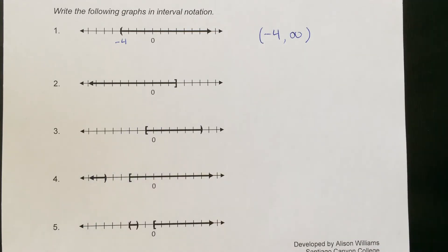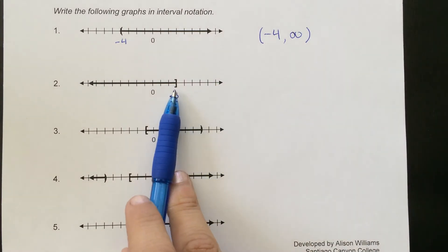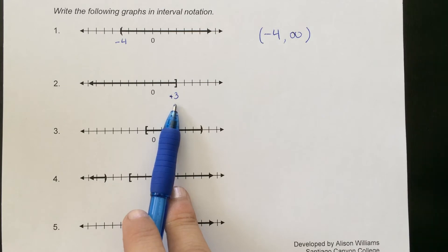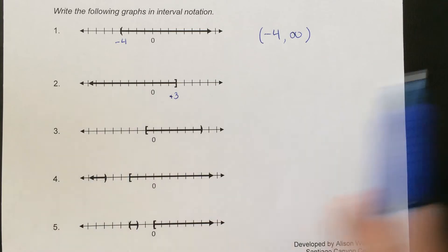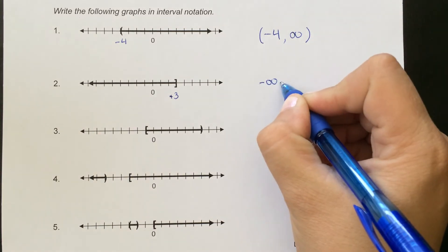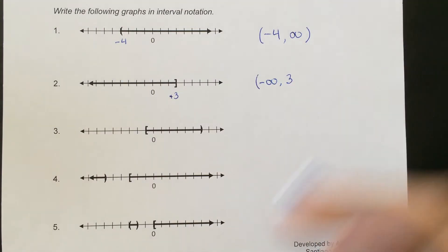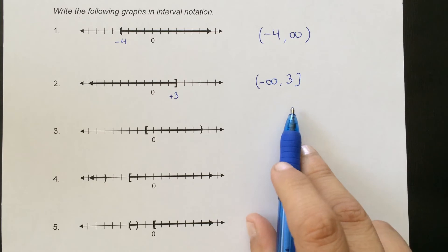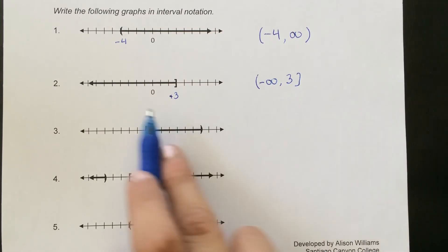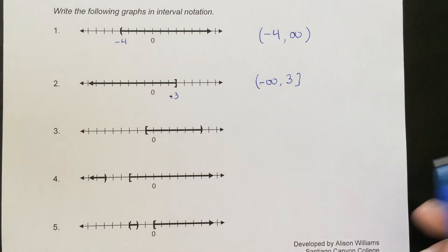Looking at the next graph, it starts at positive 3 with a bracket and goes to the left all the way to negative infinity. So the smallest number is negative infinity and it goes up to positive 3. We use a parenthesis around negative infinity because it can't actually equal negative infinity, and a bracket at 3 because it can equal 3. So this represents negative infinity to 3, bracket — from negative infinity up to 3, including 3.